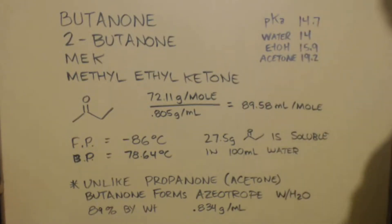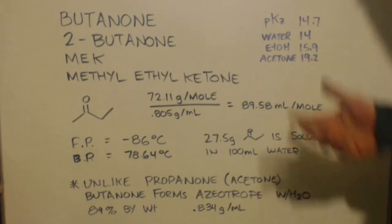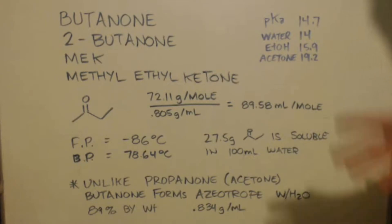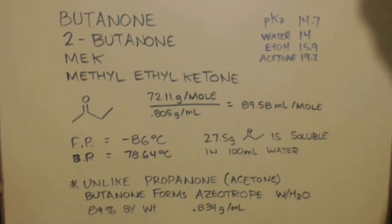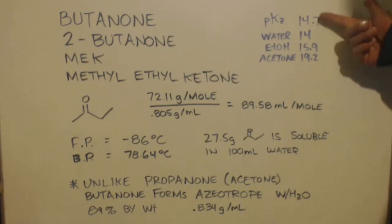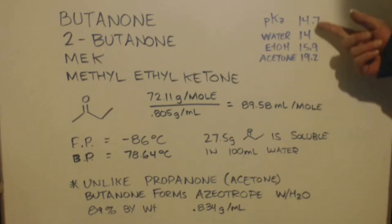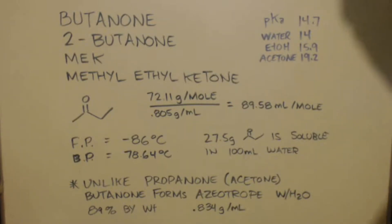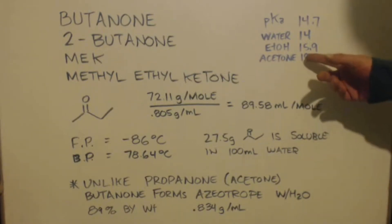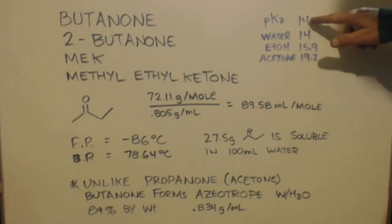There's one unique thing about butanone — the pKa is 14.7. And that's pretty low for a hydrocarbon-type solvent. It's not like water — water is 14. The pKa is almost exactly the same as water; it almost has a pKa of water. Ethanol is 15.9, so it's actually more acidic than ethanol. And you can see acetone is pretty acidic too, but it's not as acidic as say, ethanol, or this, or water.